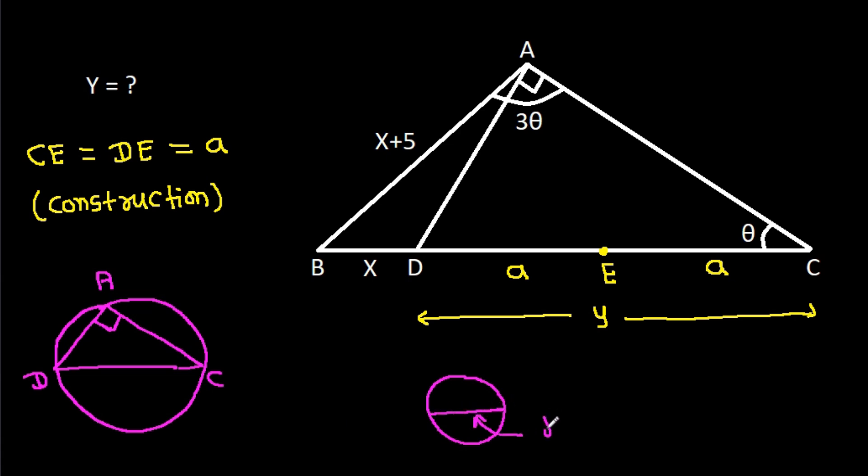We have angle CAD is 90 degrees, that means CD will be the diameter and this point is E. We have CE equals DE, that means E is the center of the circle and DE is radius, CE is radius, and AE will also be radius. So here if we join AE, then AE will be a.